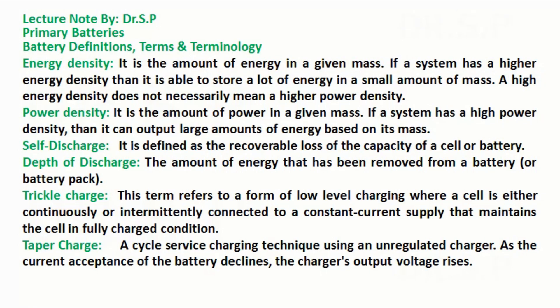Power density: it is the amount of power in a given mass. If a system has a high power density, then it can output large amounts of energy based on its mass. Self-discharge: it is defined as the recoverable loss of the capacity of a cell or battery. Depth of discharge: the amount of energy that has been removed from a battery or battery pack.